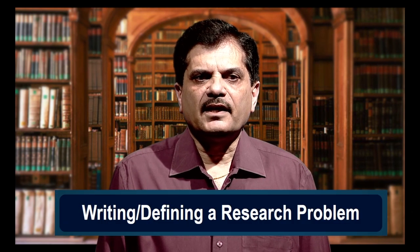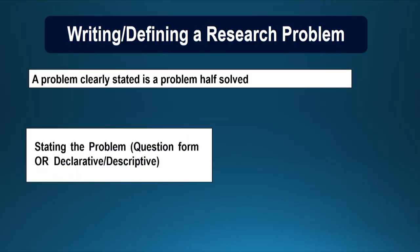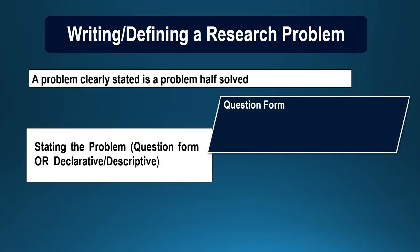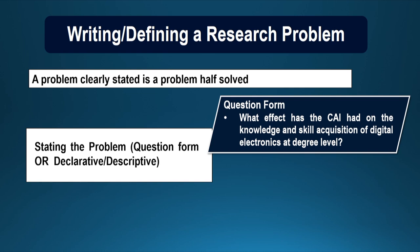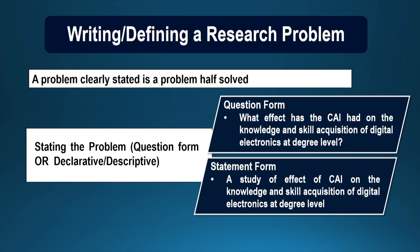Now, writing and defining a research problem: a problem which is clearly stated is a problem half solved, because you know in advance what to do and what not to do while carrying out research. Stating the problem can be in question form or in the form of a declarative or descriptive sentence. For example, in question form: 'What effect has computer assisted instruction had on the knowledge and skills acquisition of digital electronics at degree level?' The same topic in sentence form: 'A study of the effect of computer assisted instruction on the knowledge and skill acquisition of digital electronics at degree level.'